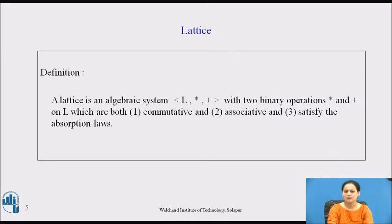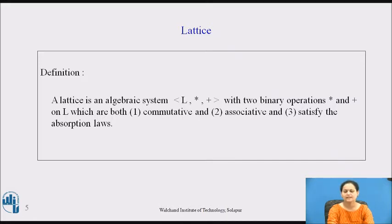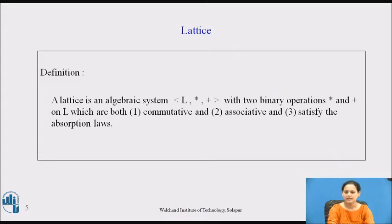Discussing the definition further, we observe that we have called this Lattice an algebraic system. The notation changes accordingly — earlier we described the Lattice as a partially ordered set (L, ≤). Now, we have replaced the partial order relation with two binary operations, namely * and +. These operations hold the following properties: commutative, associative, and satisfying the important absorption property of Lattices that we have already learned.